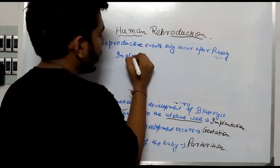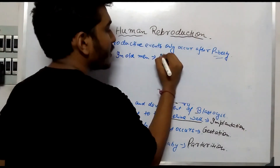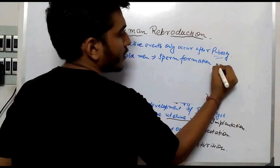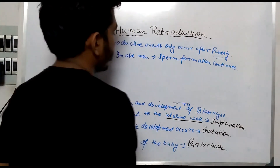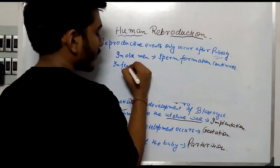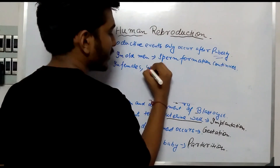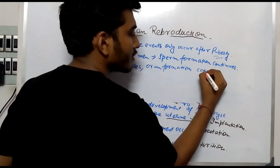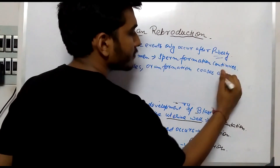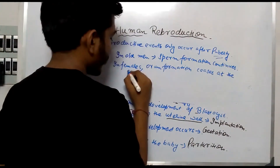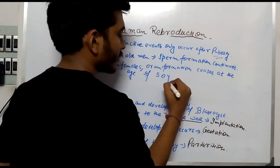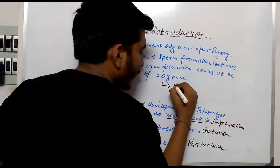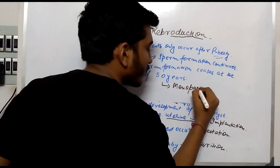In old men, sperm formation continues. But in females, ovum formation ceases — in females at around the age of 50 years. This process in females is known as menopause.